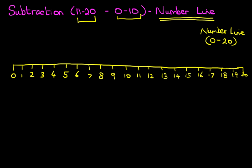Okay, we're ready to look at our first example. The question is, what is 11 minus 4? Now how do we do this using the number line?